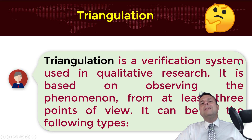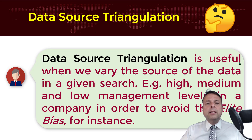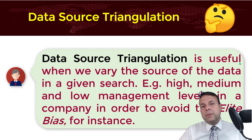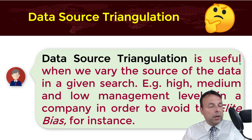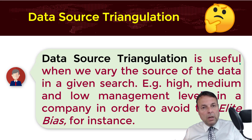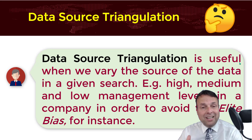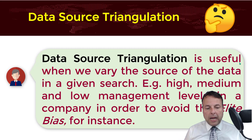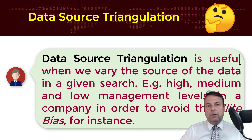It can be of the following types. Data source triangulation, which is useful when we vary the source of the data in a given search. For instance, in a given interview you may be tempted to interview only the high-level CEOs from the company, missing important information from medium and lower level management. Therefore, try to avoid what is called elite bias, which is a concentration of data regarding only one layer within the company.